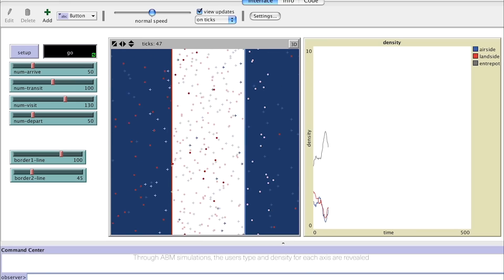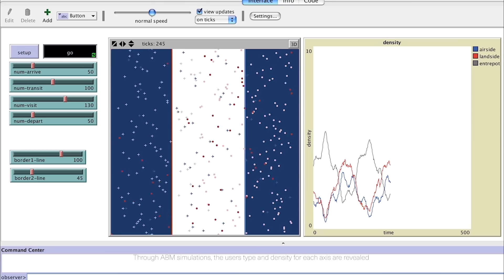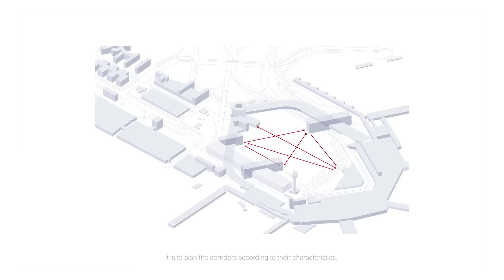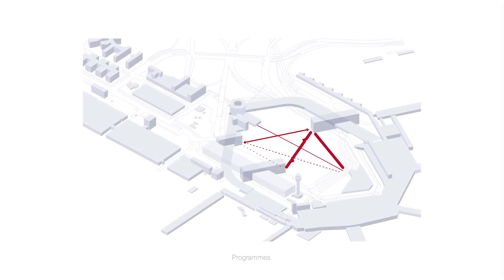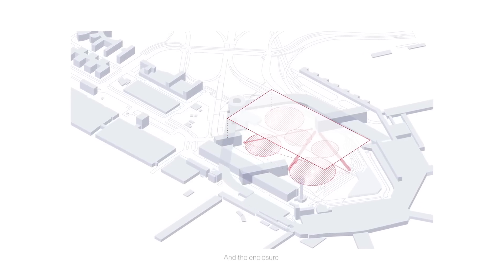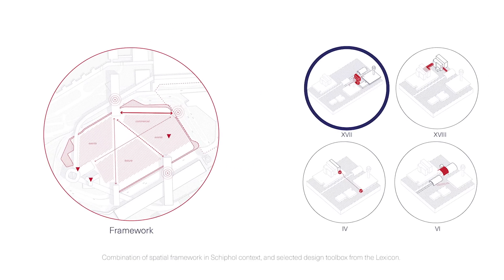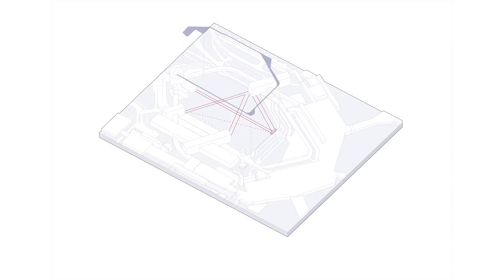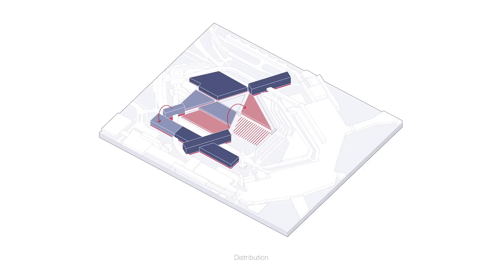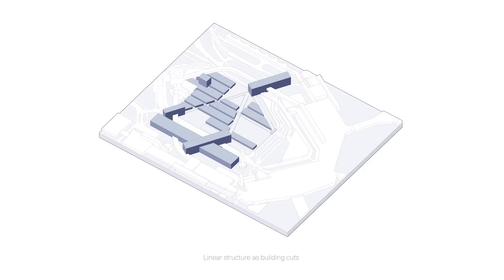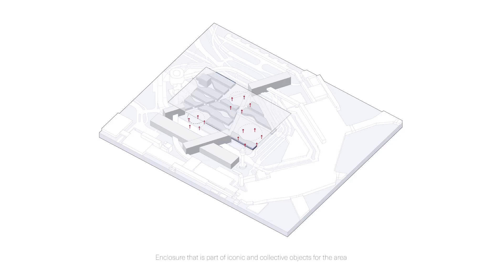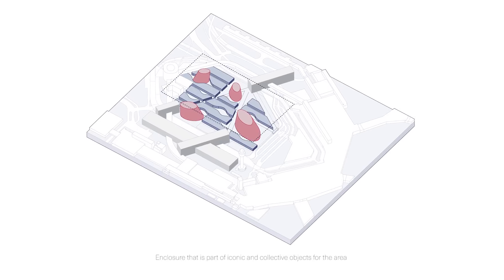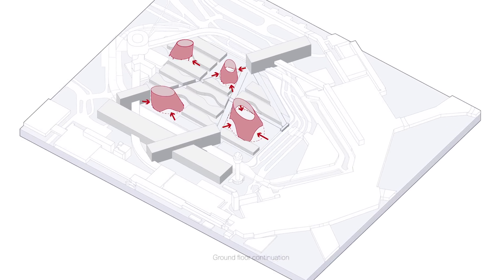Through agent-based simulations, the user type and density for each axis are revealed, allowing corridors to be planned according to their characteristics. The combination of a spatial framework in the Schiphol context and selected design toolbox from the lexicon creates a second-order design that leads to form. Specific programs, distribution, optimization, linear structure as building cuts, street buckets, enclosure as part of iconic and collective objects for the area, crown floor continuation, and the roof.